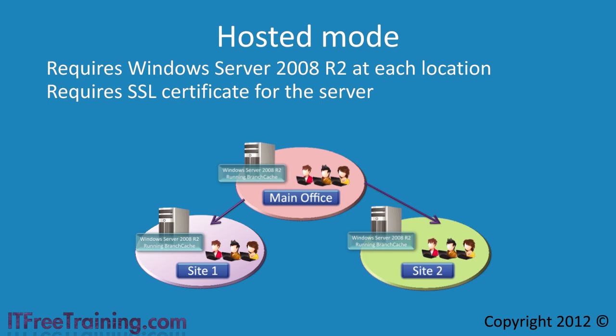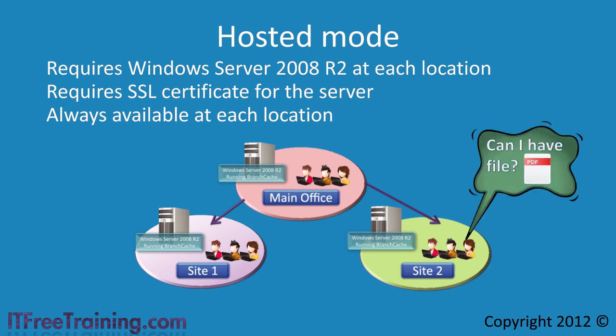The advantage of hosted mode is that Branch Cache is always available, assuming the server is always on. When a client attempts to access a file across the wide area network, the round trip is calculated. If it is greater than the default 80 milliseconds — that is the time taken from the client computer to the WAN to the server and back again — the file is automatically cached with Branch Cache.